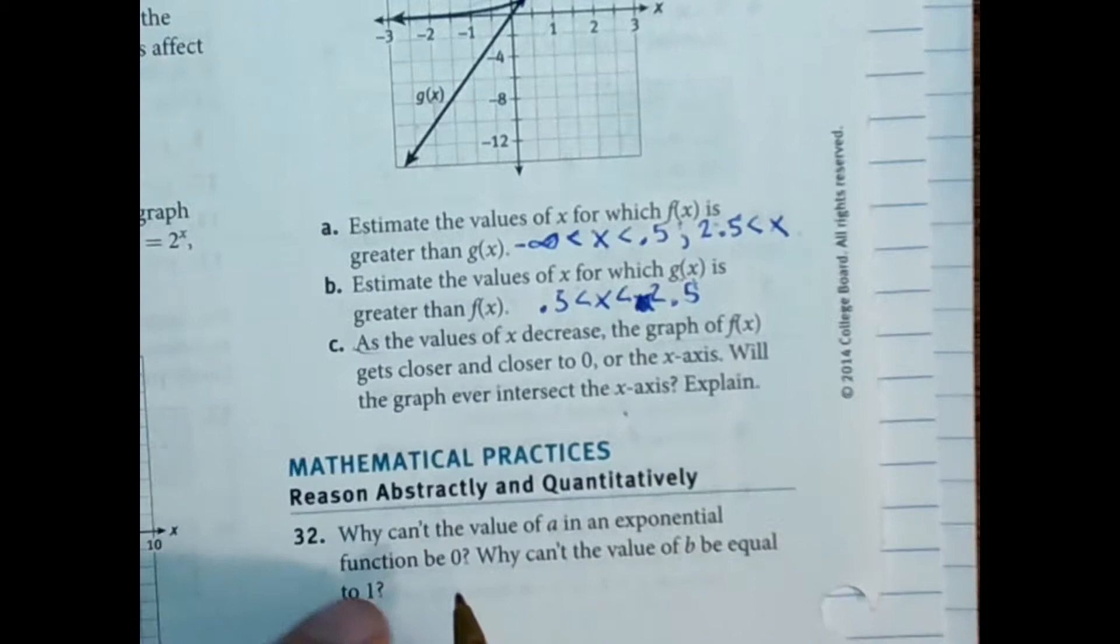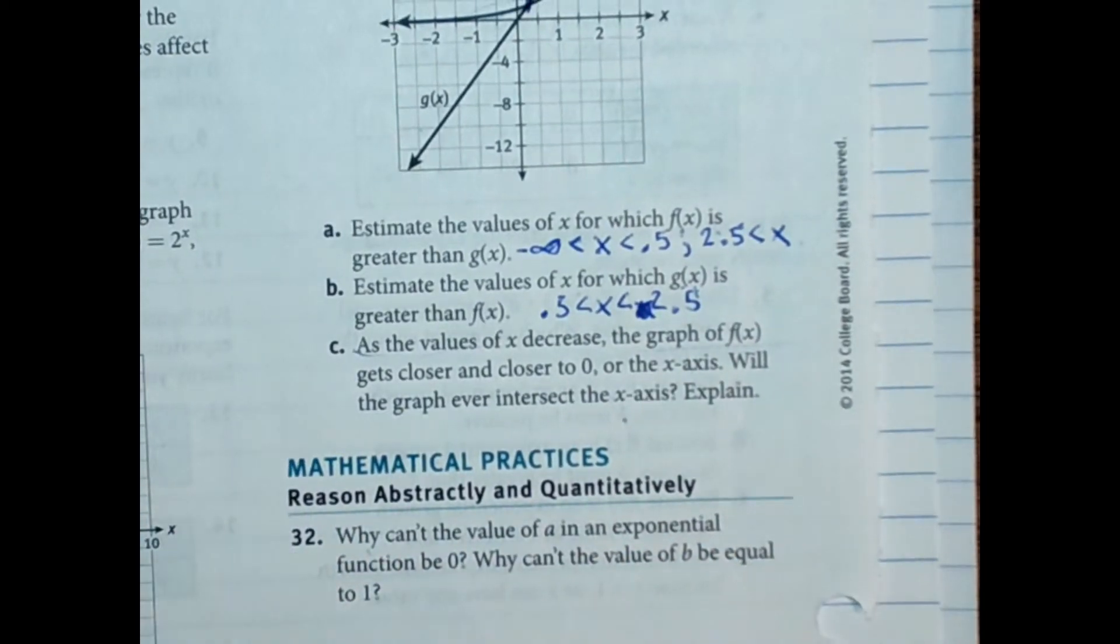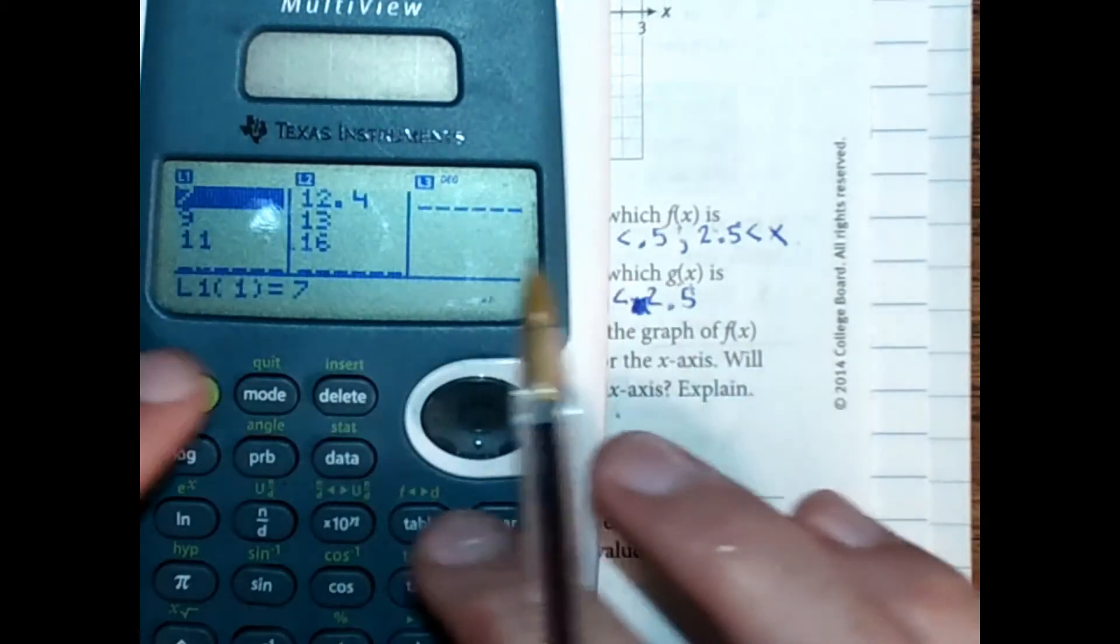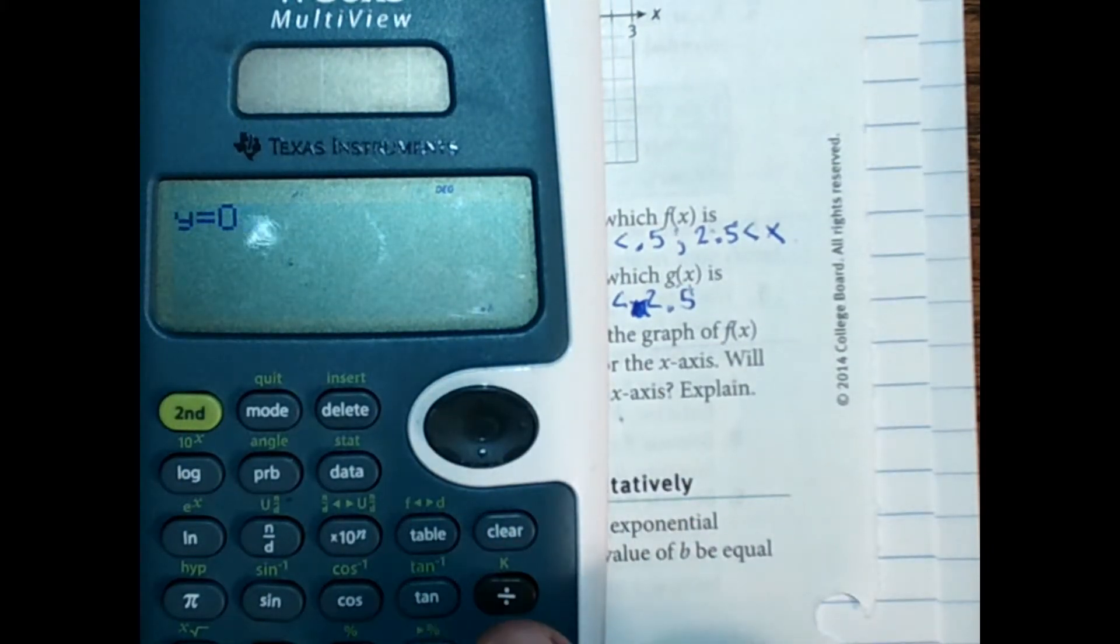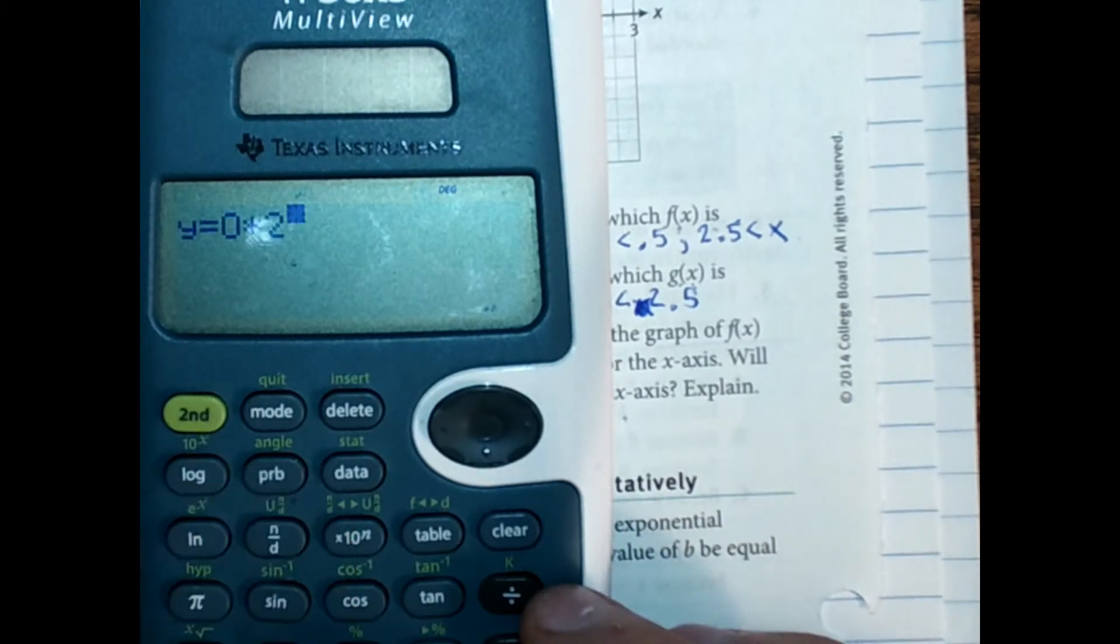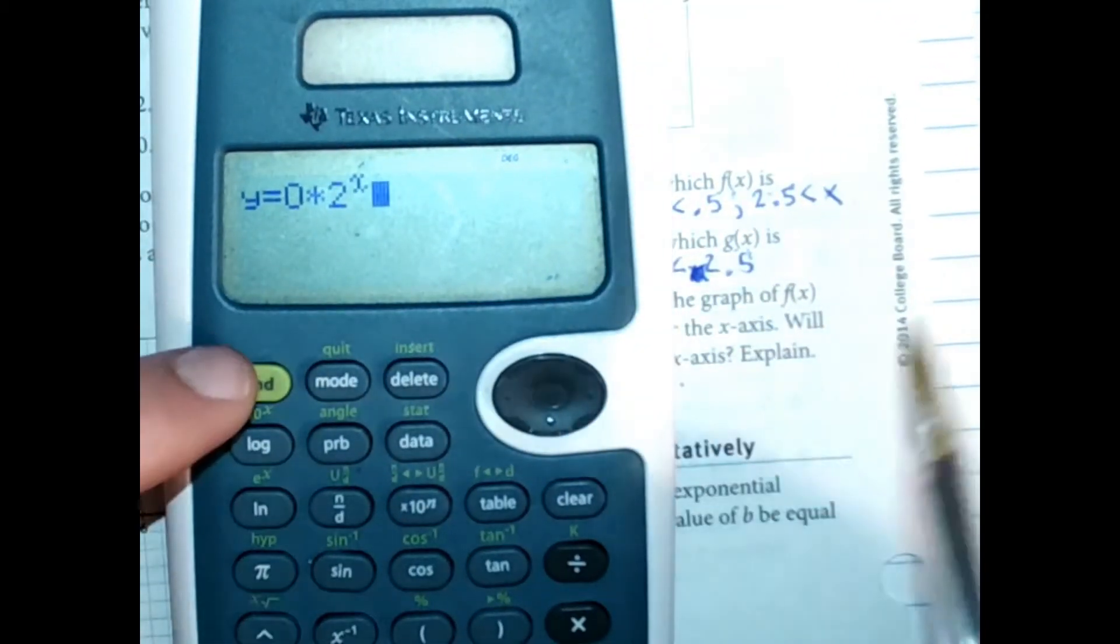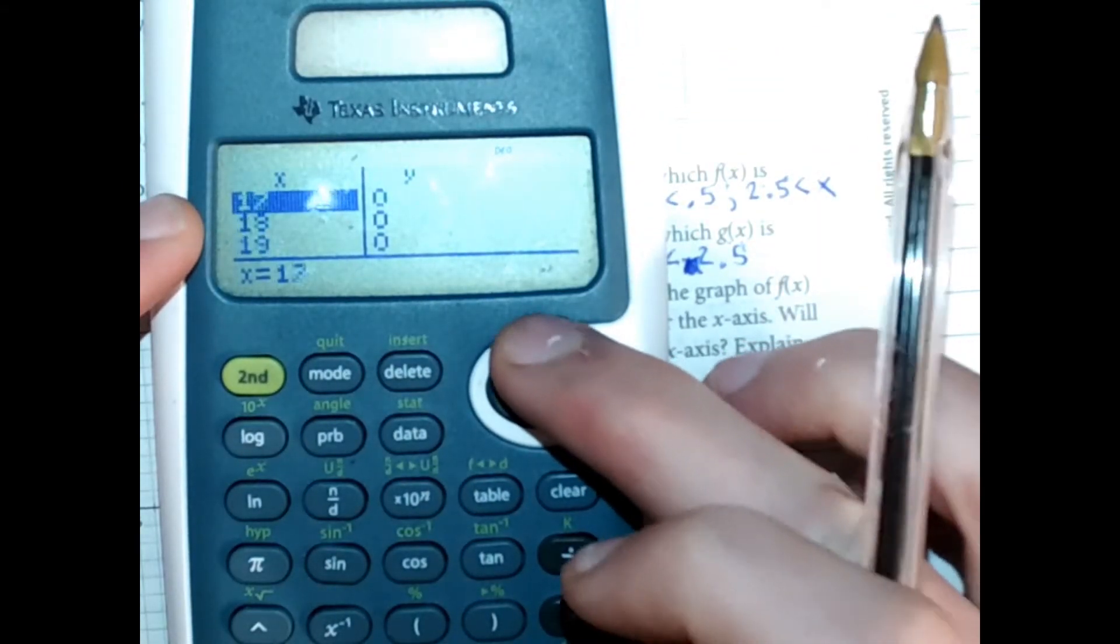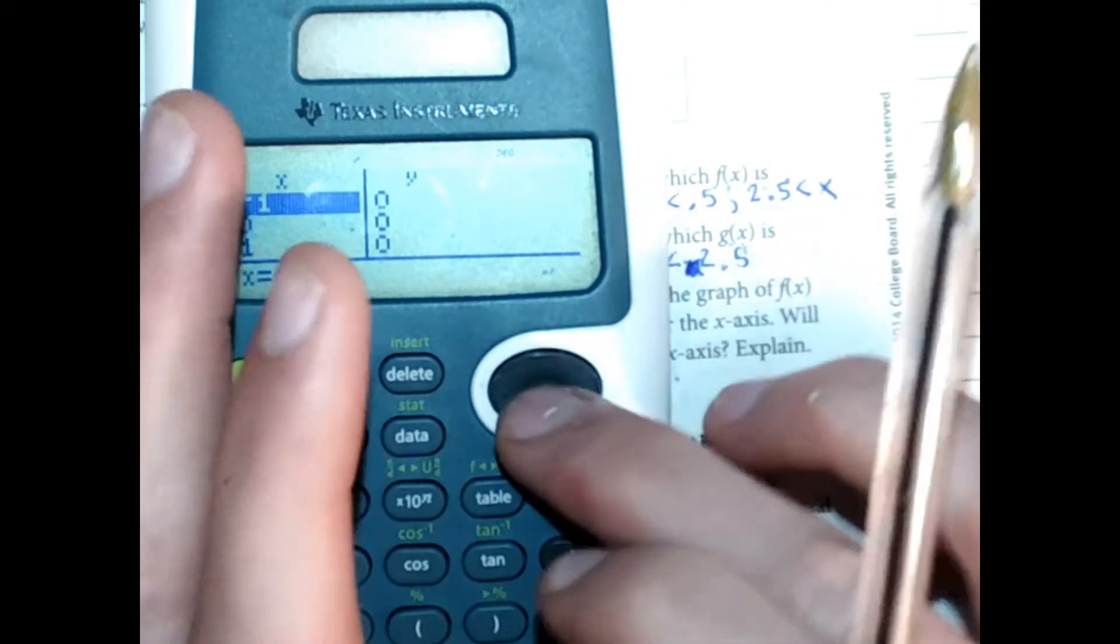And then number 32, why can't the value of a in an exponential function be 0? Well, that should be fairly obvious. Here's an exponential function with a value 0 times 2 raised to the x power. And what number are we going to get back? 0. It doesn't matter what you put in for x, you're always going to get 0. So that's not really an exponential function. That's a straight line at y equals 0.